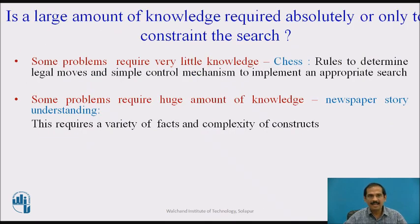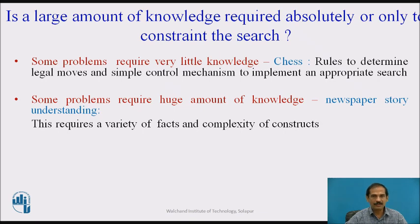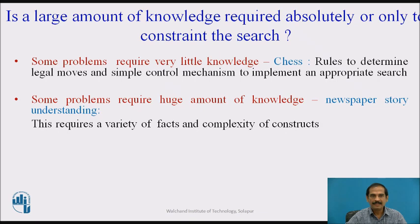The next key aspect is: is a large amount of knowledge required absolutely, or only to constrain the search? Some problems require very little knowledge — for example, in search, we just require the rules to determine legal moves and simple control mechanisms to implement the appropriate search. Some problems require a huge amount of knowledge — for example, a newspaper story that has to be understood and interpreted requires a variety of facts and complex constructs.